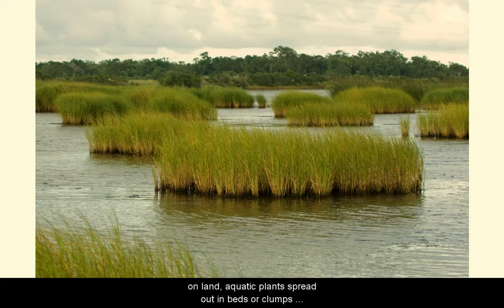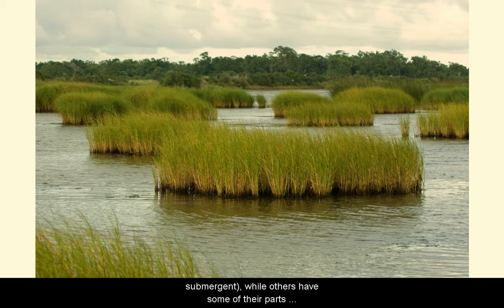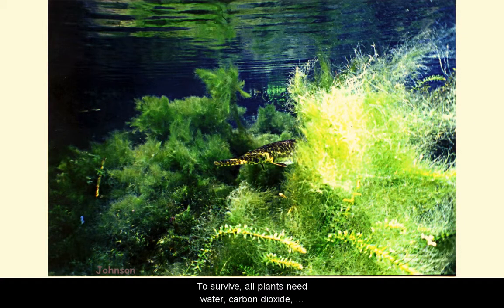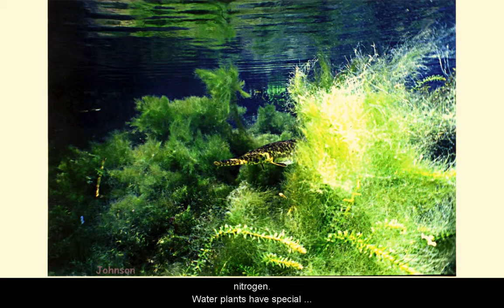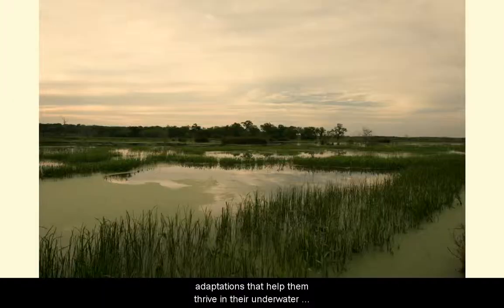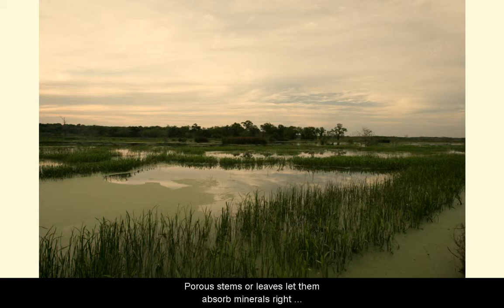Let's talk about aquatic plants. It's like a band of life around lakes and ponds. Like plants on land, aquatic plants spread out in beds or in clumps and they attract a variety of animal life. Some plants live entirely underwater — these are called submergent plants — while other plants have some of their parts sticking out of the water — these are called emergent plants. To survive, all plants need water, carbon dioxide, sunlight, and nutrients such as phosphorus and nitrogen.